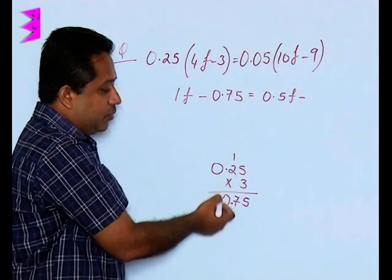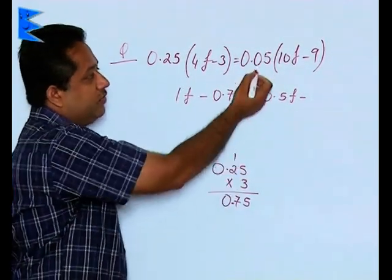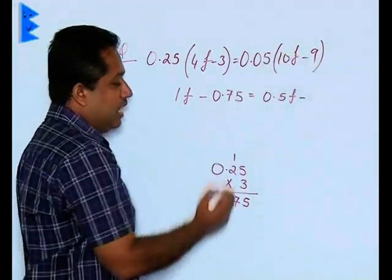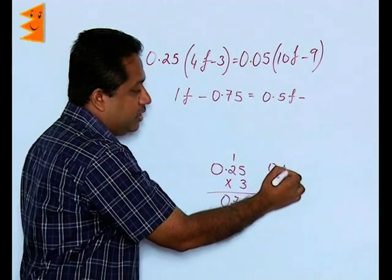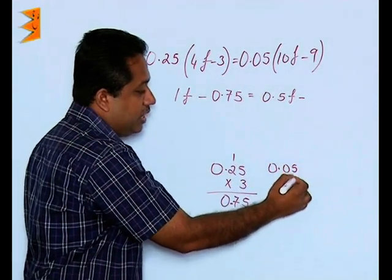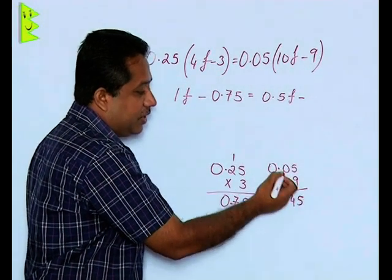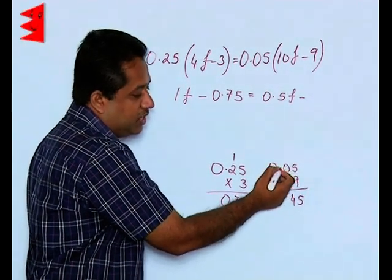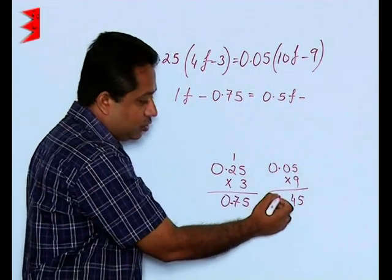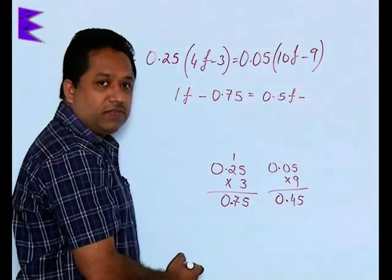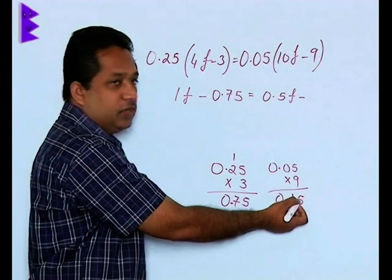Repeat the procedure as I showed here: 0.05 into 9. 0.05 into 9 we know is 9 fives or 45, but there are two numbers after the decimal, so your answer also will have two numbers after the decimal. So this will be 0.45.